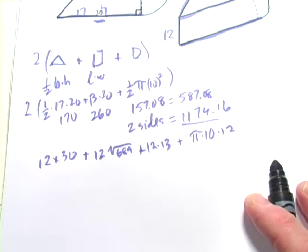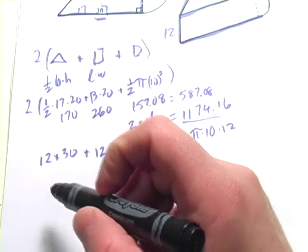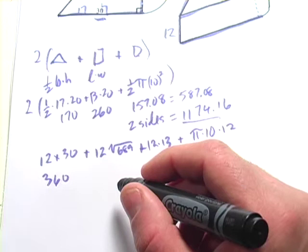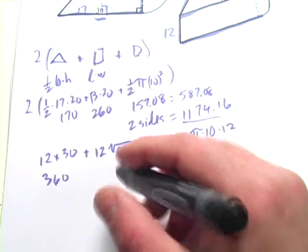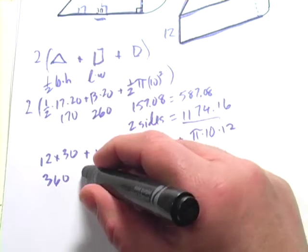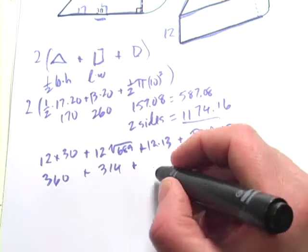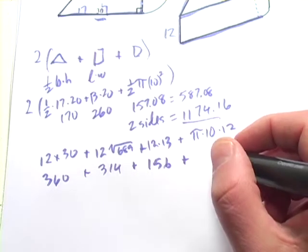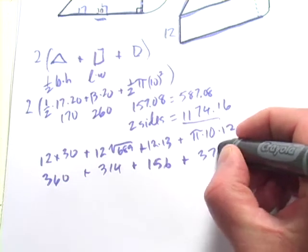So let's see. 12 by 30, that's 360. 12 times square root of 689, that's about 314. 12 times 13 is 156. And pi times 10 times 12 is about 377.